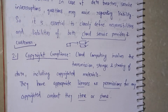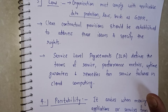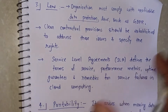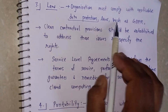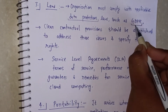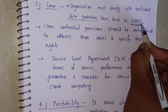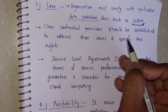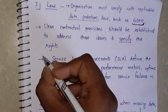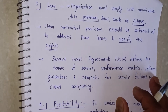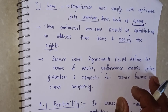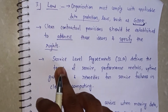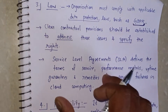The third issue is laws. In the digital world, laws are compulsory because anyone can do anything, and with laws there are restrictions. Organizations must comply with data protection laws such as GDPR, which is a very useful law used when data leaks happen. Clear contractual provisions should be established to address issues and specify rights — whatever documents you create for the provider and client should clearly state what rights a person has.